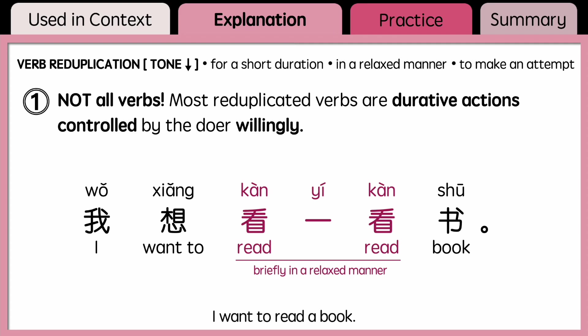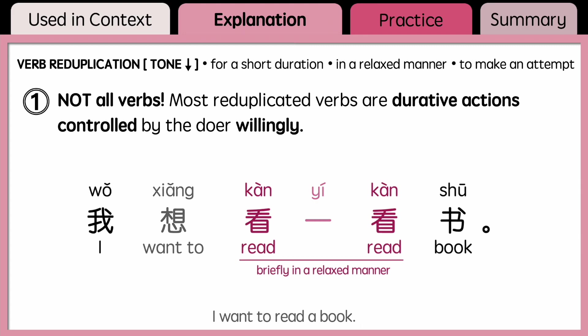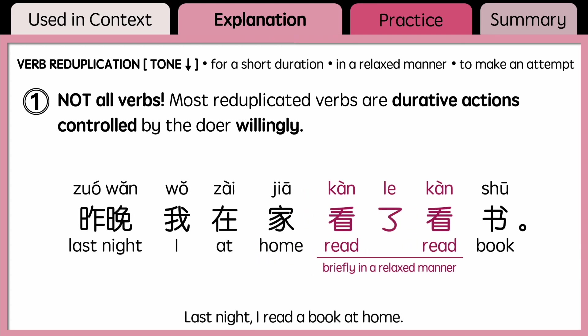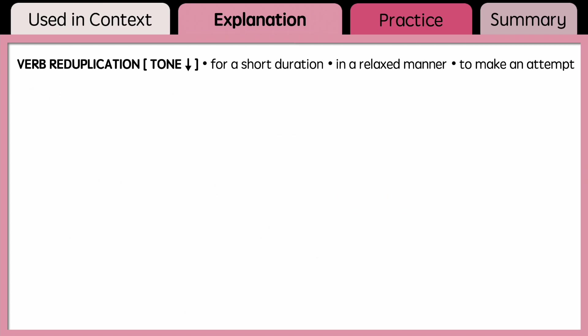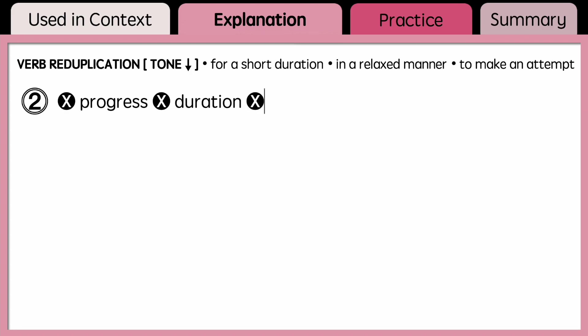So 我想看看书 or 我想看一看书 expresses the idea of 'I want to read a book casually for a little while.' If the action already happened, you can add 了 in between, as in: 昨晚我在家看了看书, indicating progress, duration, or result.